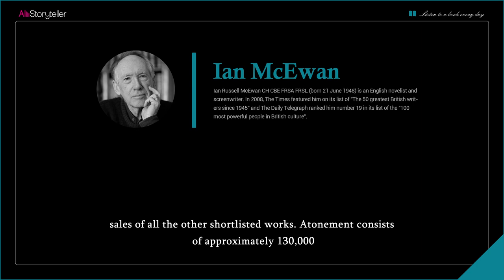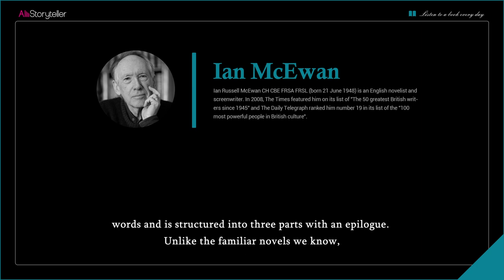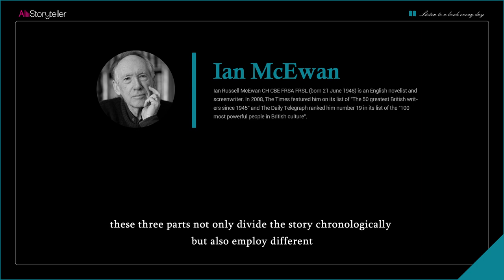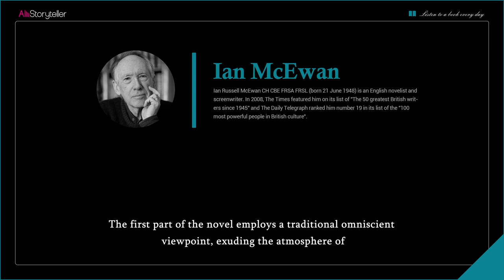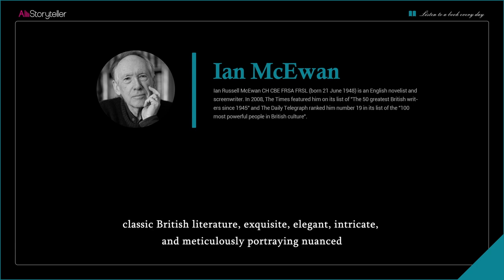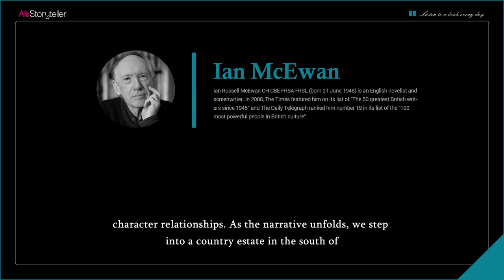Atonement consists of approximately 130,000 words and is structured into three parts with an epilogue. Unlike the familiar novels we know, these three parts not only divide the story chronologically but also employ different narrative perspectives and writing styles, taking turns to tell the tale. The first part employs a traditional omniscient viewpoint, exuding the atmosphere of classic British literature — exquisite, elegant, intricate, and meticulously portraying nuanced character relationships.